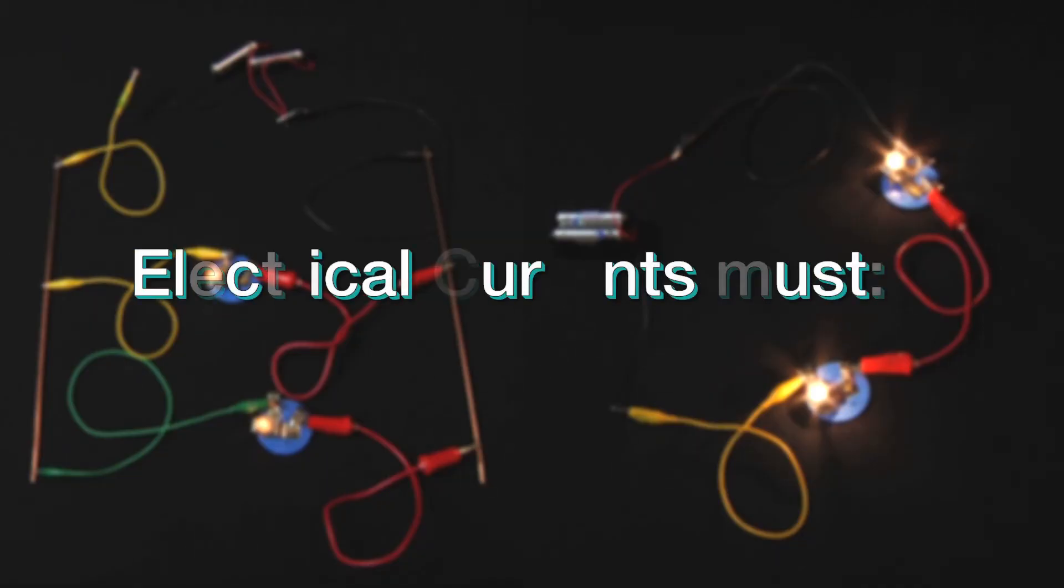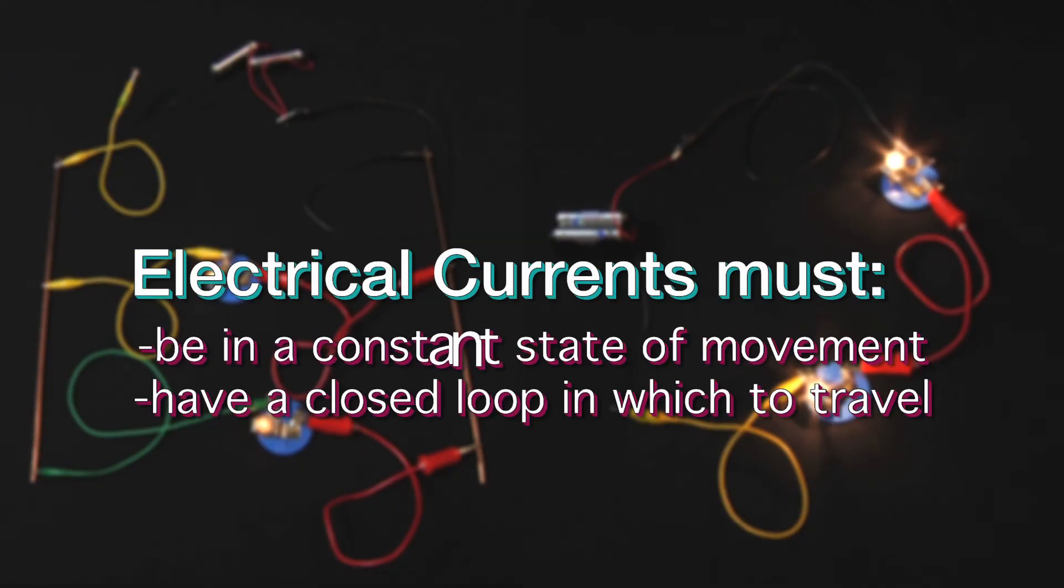Regardless of the type of circuit, electrical current must be in a constant state of movement in order to supply power, and must have a closed loop in which to travel.